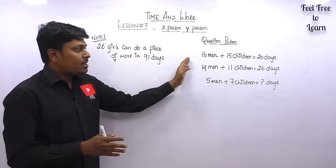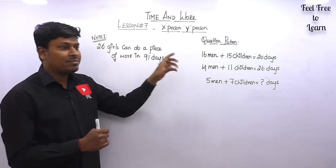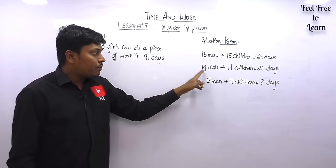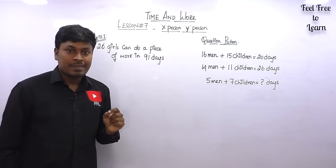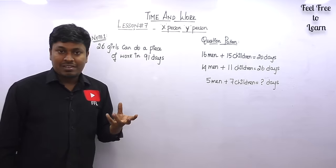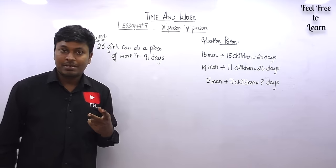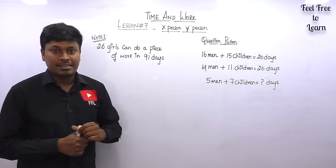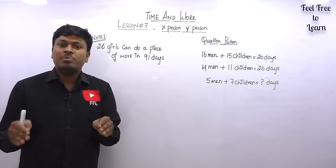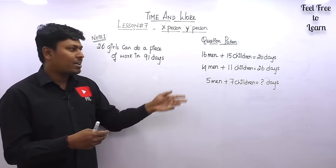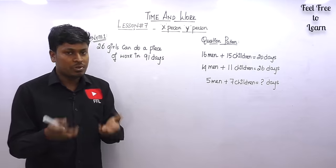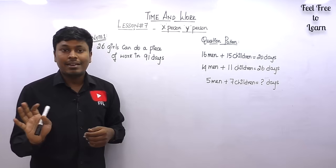Here is how a typical question looks: '16 men and 15 children can complete a piece of work in 20 days. 14 men and 11 children will complete the same piece of work in 26 days. How many days will 5 men and 7 children take to do this work?' There are two methods to solve this: one is the equation method, and the second is a shortcut method. Learn both methods, because for some questions the equation method is easier, and for others the shortcut is easier. After watching this video, practice more questions from aptitude books to get a feel for which method suits each question.